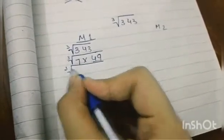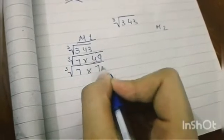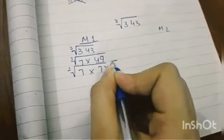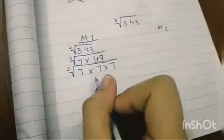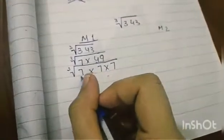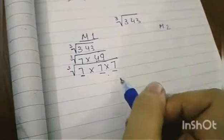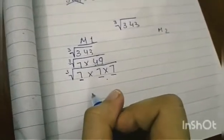Now, 7 into 7. 7 sevens are 49. So, 7 into 7 into 7. We get all 7s, so 7 is a prime number. And 7 is the answer.